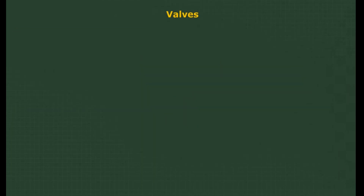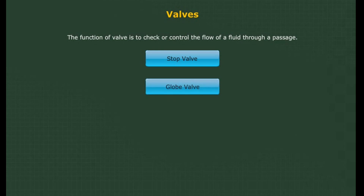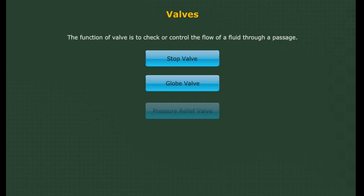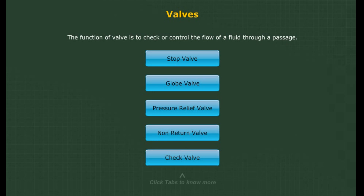Valves. A valve is a piece of mechanism, the function of which is to check or control the flow of a fluid through a passage. Valves can be classified as: stop valve, globe valve, pressure relief valve, non-return valve, and check valve.